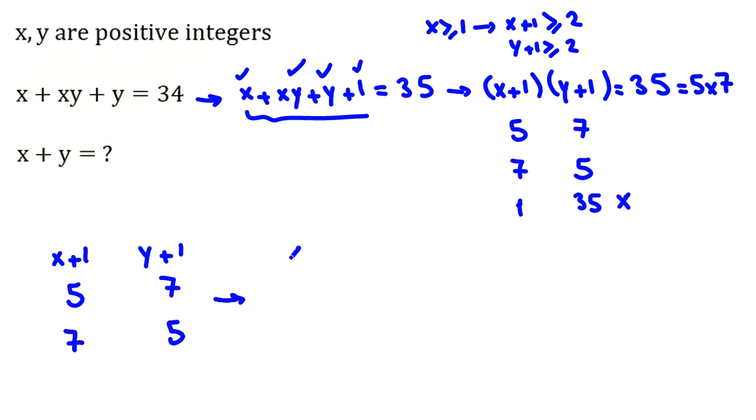So if you consider x and y, in this case, x plus 1 is 5, so x is 4, y plus 1 is 7, y is 6. In this case, x plus 1 is 7, x is 6, y plus 1 is 5, y is 4.